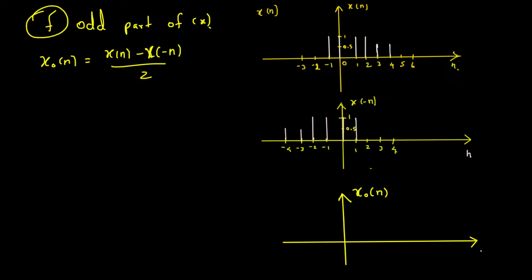We have values from negative four to four; everything outside that range is zero, so we only worry about the points where x is something. Looking at negative four: x of n there is zero, so it's zero minus 0.5 divided by two, which gives negative one over four.